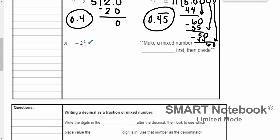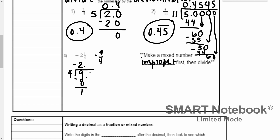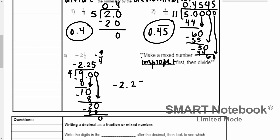For negative 2 and 1/4, we first convert the mixed number to an improper fraction: 2 times 4 is 8, plus 1 is 9, so it's negative 9/4. A negative divided by a positive gives a negative answer, so we put the negative sign in our answer and then divide 9 by 4. 4 goes into 9 two times — subtract 8, remainder 1. Add a decimal and a 0: 4 goes into 10 two times — subtract 8, remainder 2. Add a 0: 4 goes into 20 five times — 4 times 5 is 20, subtract and we're done. Our answer is negative 2.25.